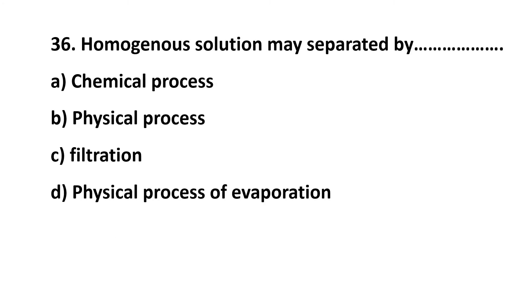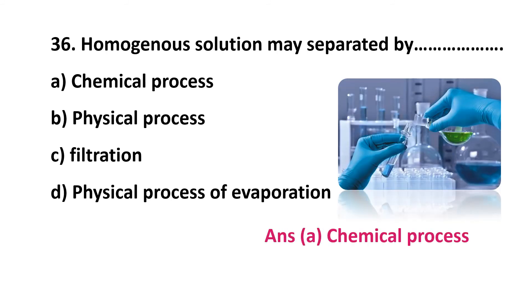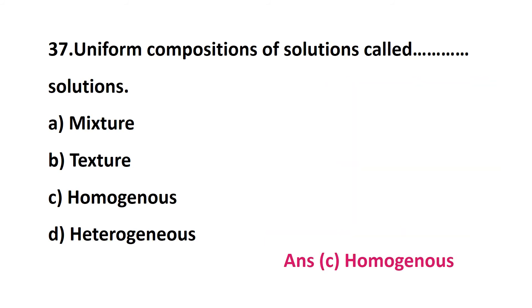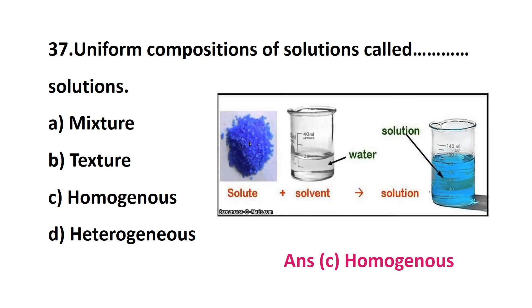Question 36: a homogeneous solution may be separated by — chemical process, physical process, filtration, or physical process of evaporation? The correct answer is option A: chemical process. A homogeneous solution is separated by chemical process. Question 37: uniform composition of a solution is called — mixture, texture, homogeneous, or heterogeneous? The answer is homogeneous solution — a uniform composition of solution is known as a homogeneous solution.